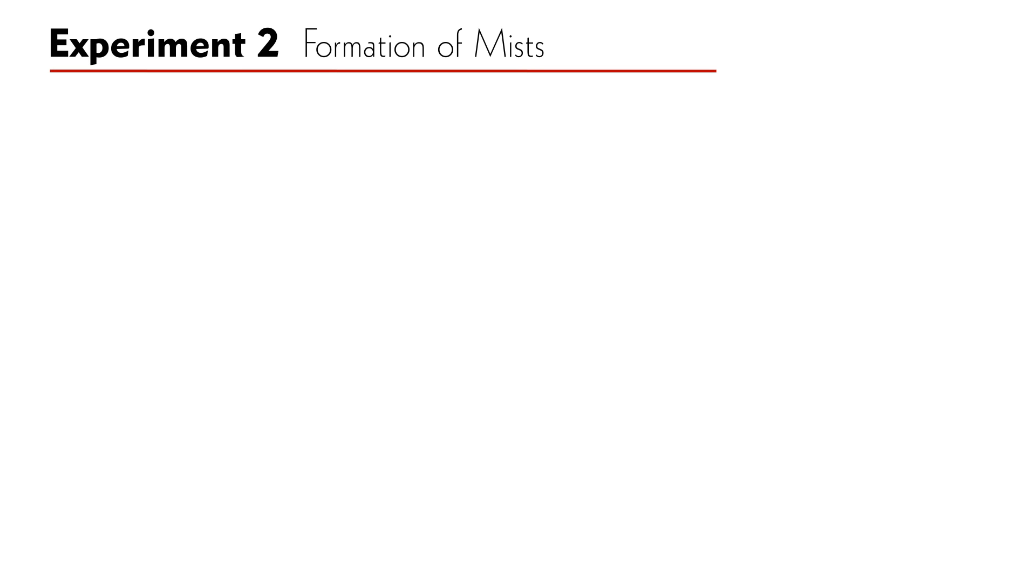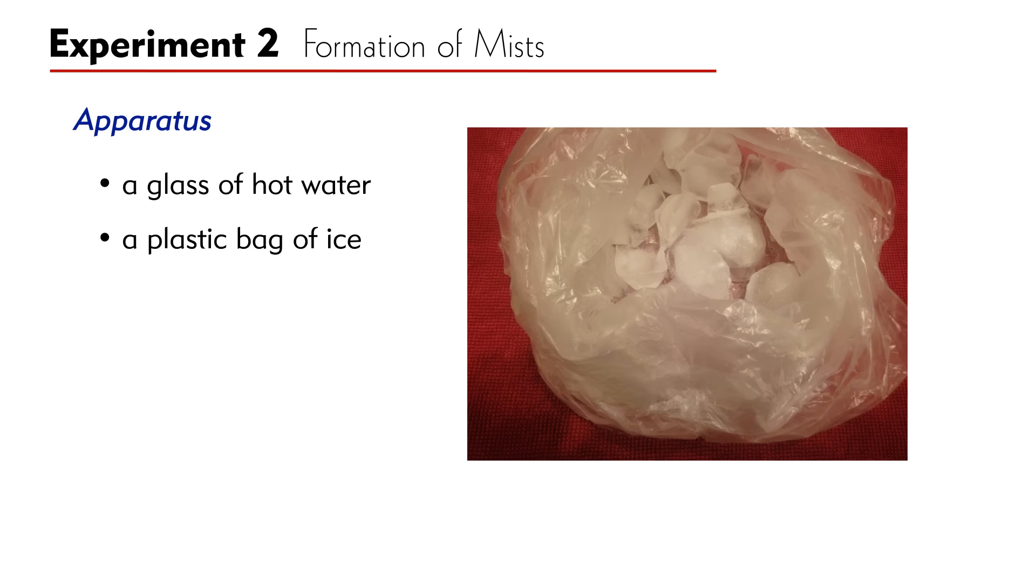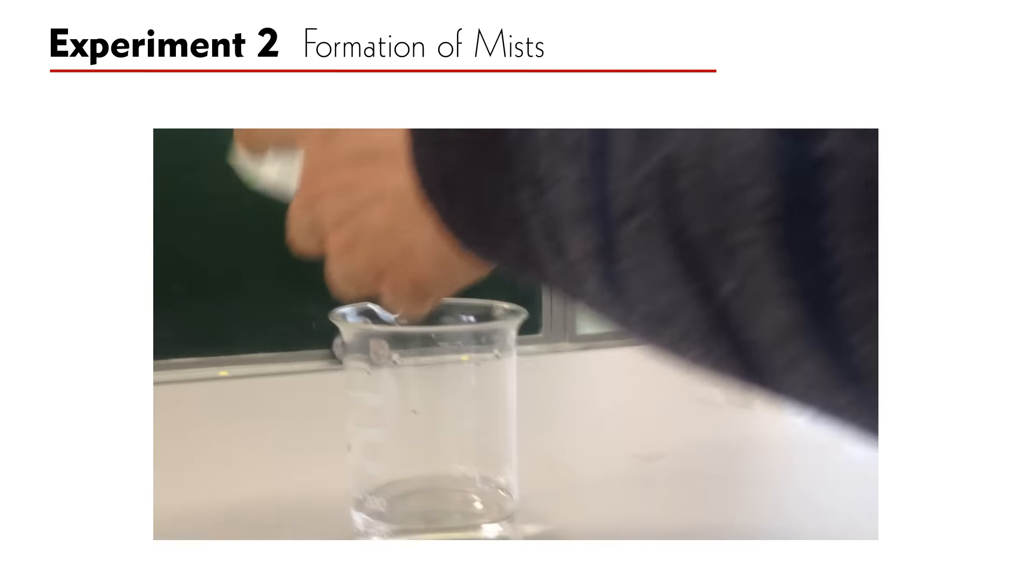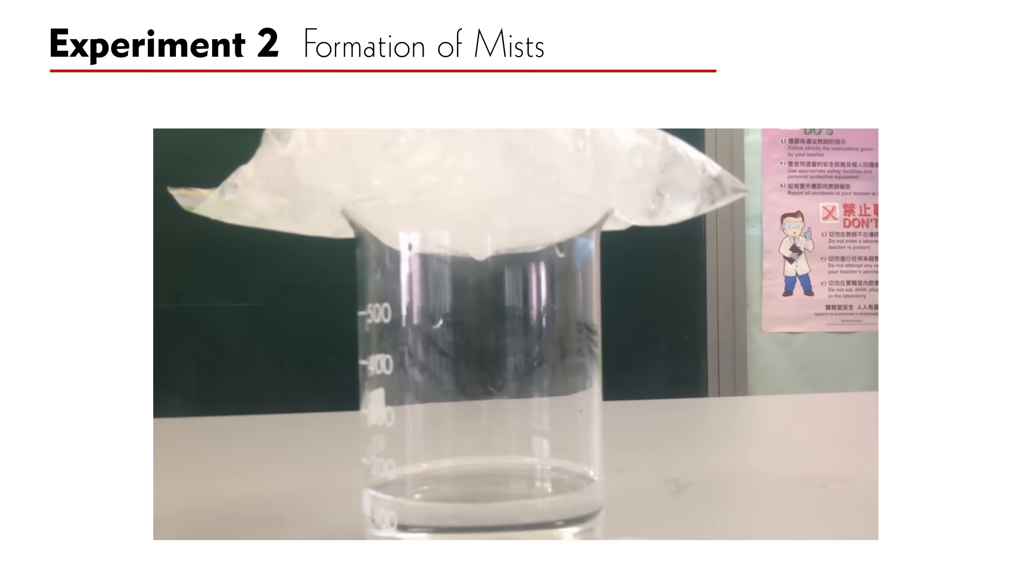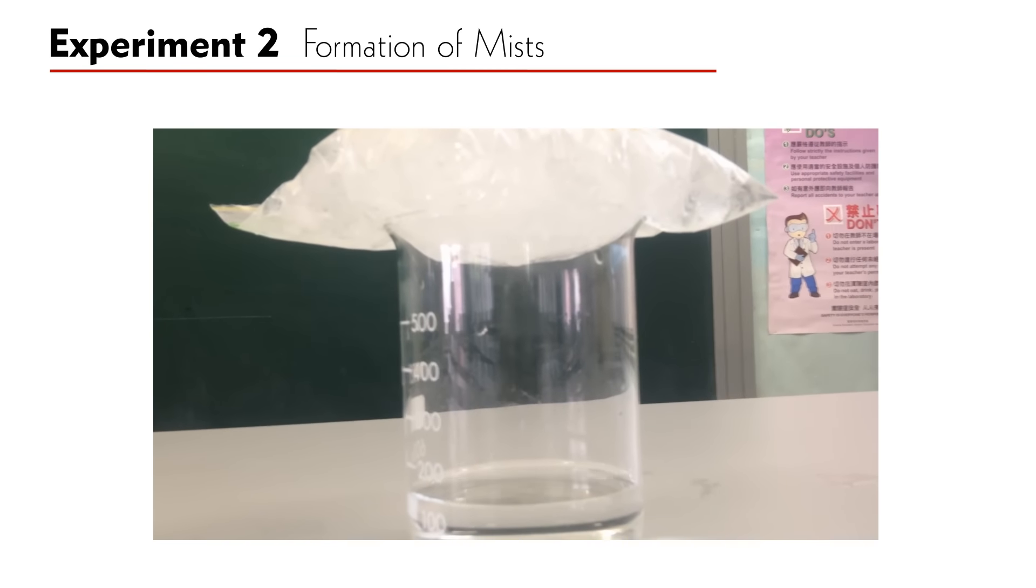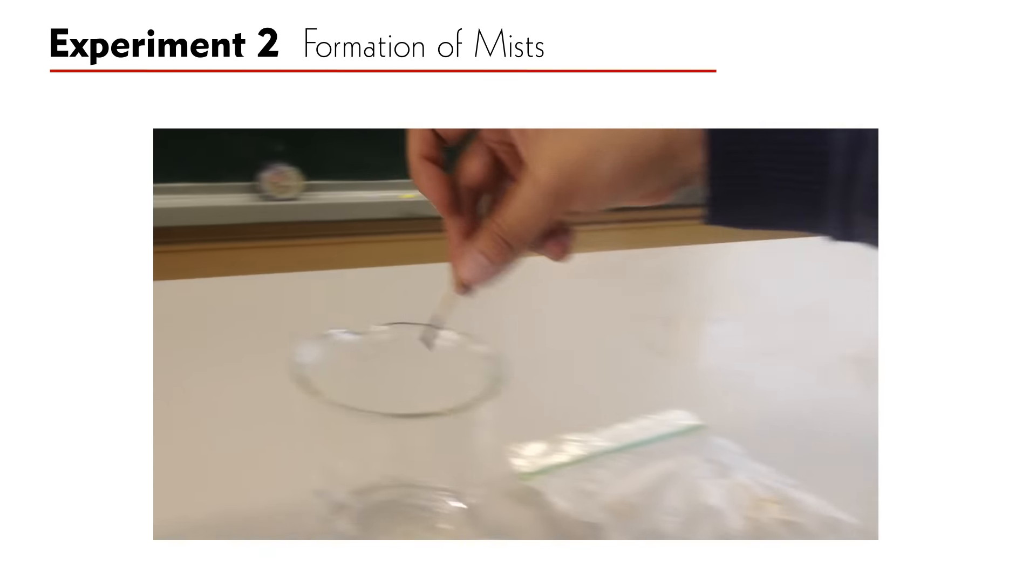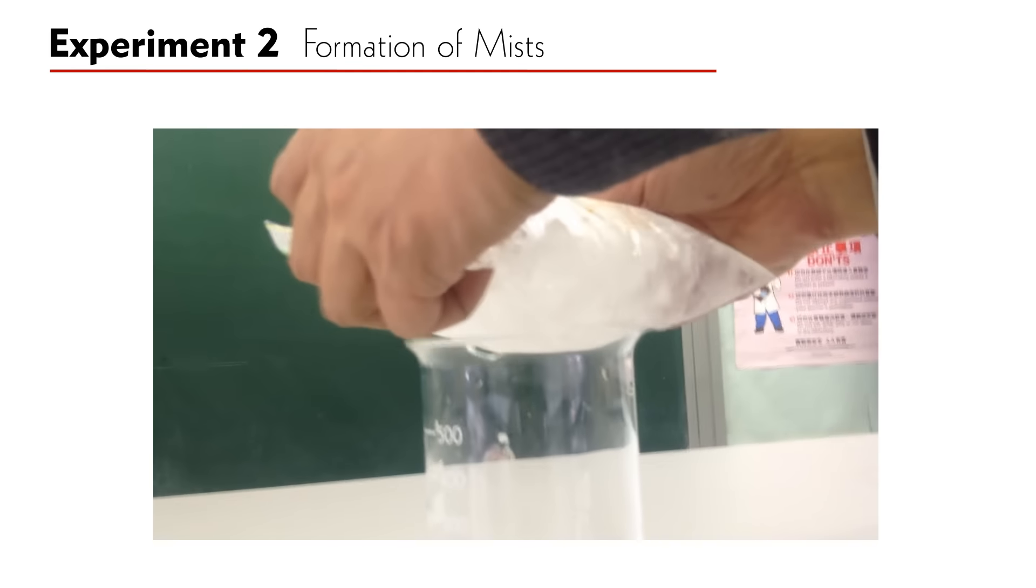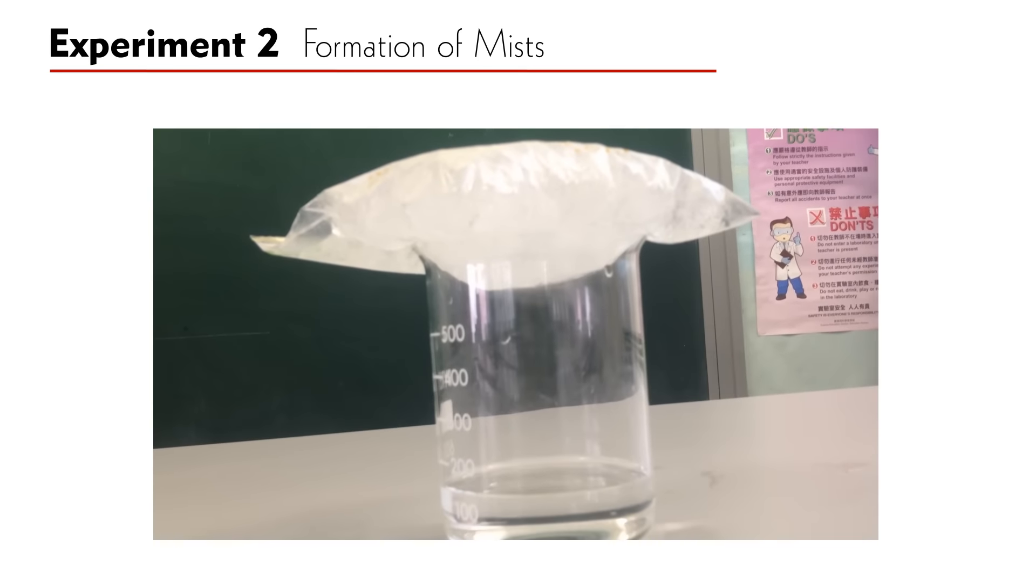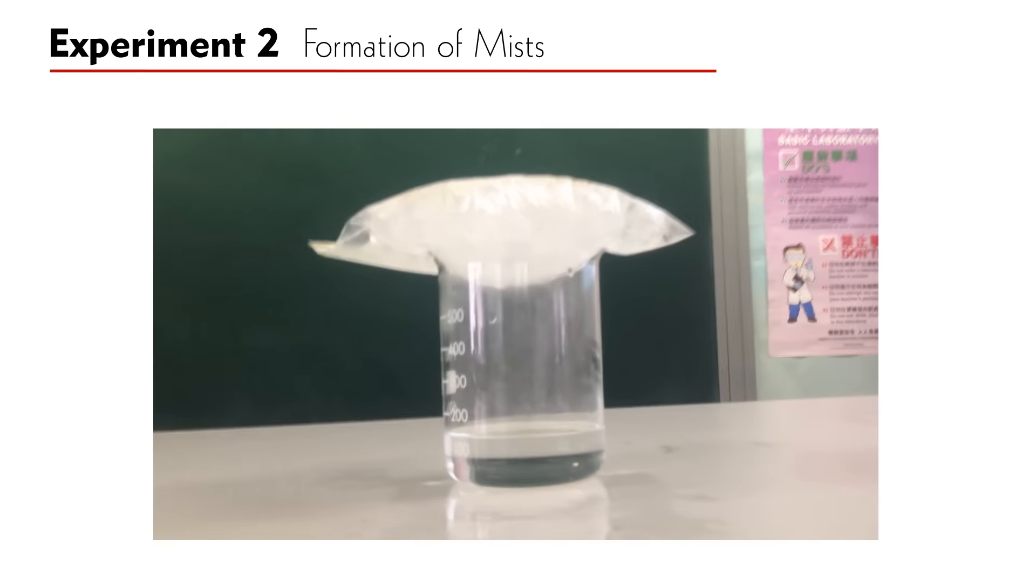In the following experiment, you will see how water vapor condenses into water drops directly. The apparatus includes a clear glass of hot water, ice in a plastic bag, and a match. Due to evaporation, the air above the hot water consists of large amounts of water vapor. The water vapor tends to condense into liquid water, but the clean air slows down the condensation. Therefore, the result is difficult to observe. However, when we add some smoke inside by an extinguished match, the water vapor will condense more quickly.